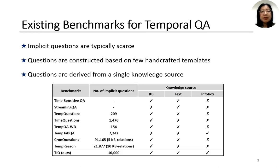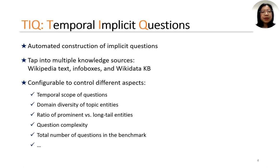The limitations in the existing benchmarks are in three aspects. Implicit questions are typically scarce. Questions are constructed based on few handcrafted templates, which means questions lack syntactic diversity. And the questions are derived from a single knowledge source — KB text or infobox.